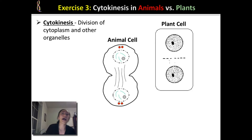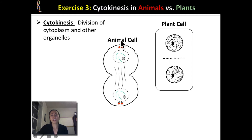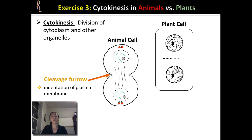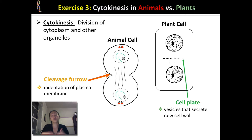Cytokinesis needs to occur after the genetic information has separated. It is the division of the cytoplasm and all the fluid inside a cell, and it's when organelles like the mitochondria, chloroplast, and Golgi bodies also split evenly into two cells. In animal cells, which have no cell wall, the plasma membrane simply pinches off — this is called a cleavage furrow. In plant cells, which have a cell wall, they form a cell plate made of vesicles that secrete the new cell wall to create two new cells.